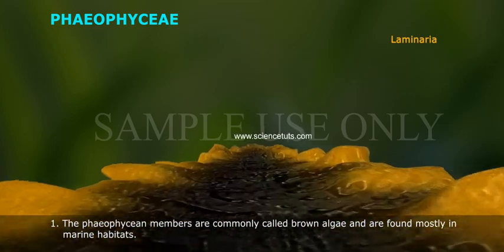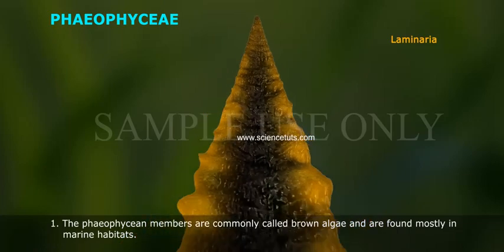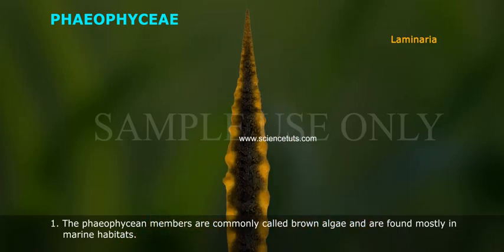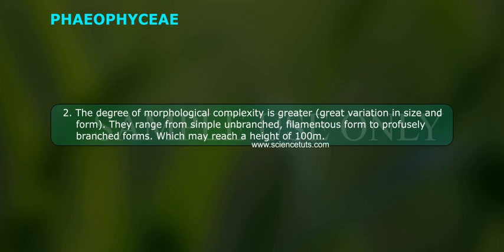The Phaeophyta members are commonly called brown algae and are found mostly in marine habitats. The degree of morphological complexity is greater. There is great variation in size and form; they range from simple unbranched filamentous forms to profusely branched forms which may reach a height of 100 meters.